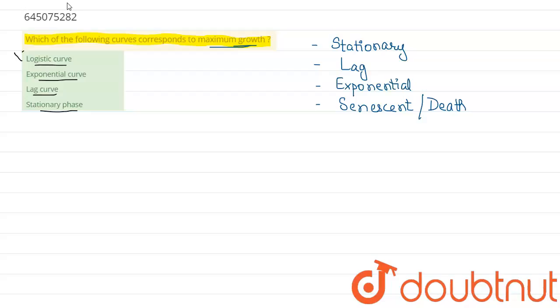Coming to the second option, we have exponential curve. So exponential curve is the second phase of growth. In this phase, the plant shows the maximum growth. Maximum growth is seen during this phase and plant